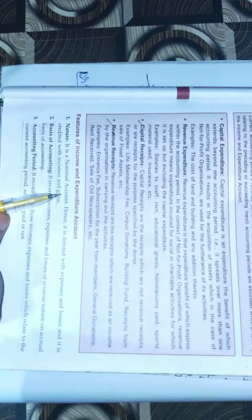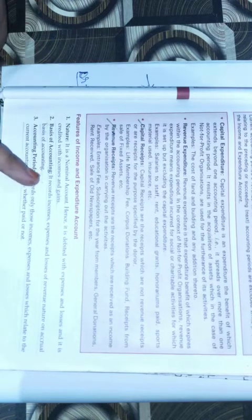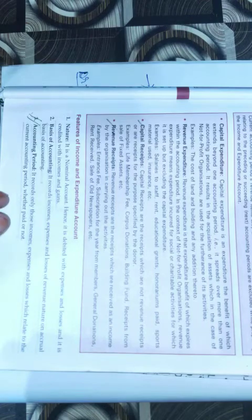The nature or features of income and expenditure account: it is a nominal account — this is frequently asked in objective questions. It is debited with expenses and losses and credited with income and gains. The basis of accounting is accrual basis. Regarding accounting period, it is very important — it records only income, expenses and losses which are related to the current accounting period, whether paid or not. For example, if you are preparing accounts for 2020, it will record only 2020 items, not 2019 or 2021. This is different from receipt and payment account which records all years.